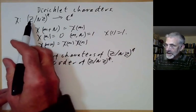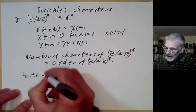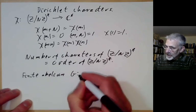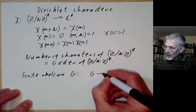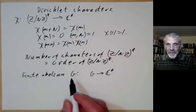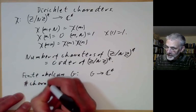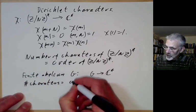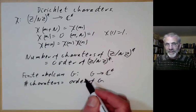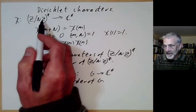Notice that we can define a character for any finite abelian group — a character is just a homomorphism from G to the non-zero complex numbers. We can check that the number of characters of a finite abelian group is equal to the order of the group G, and the proof is more or less the same as what we did last lecture for the special case of Z over nZ star.